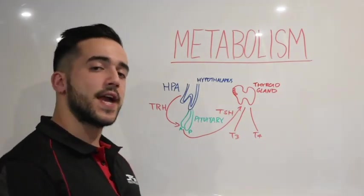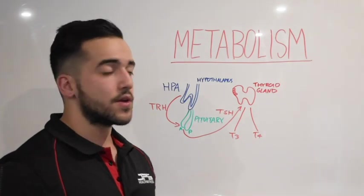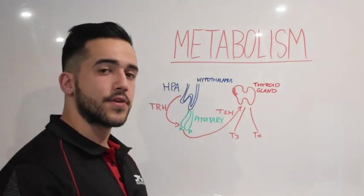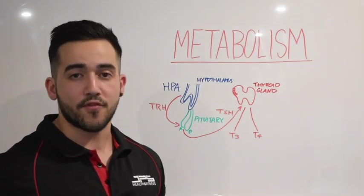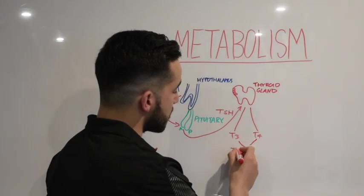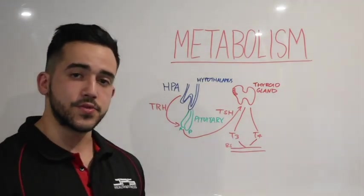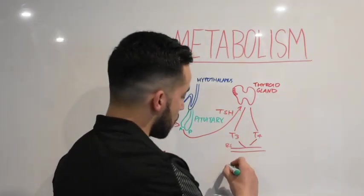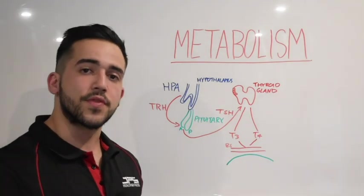Interestingly, the thyroid gland actually produces a lot more T4 than T3 — about an 80/20 ratio. What happens is there's a conversion that takes place to ensure there is enough T3 hormone within the body, within the bloodstream, and within certain target tissues to promote the functions of the thyroid gland. These hormones will reach the bloodstream and make their way into target tissues, which could be skeletal muscle tissue or the liver. Within those tissues we have cells, and within each cell there is a nucleus.